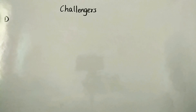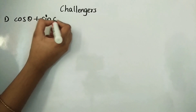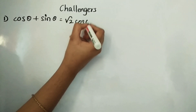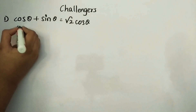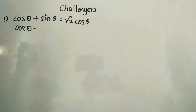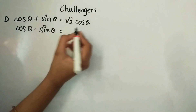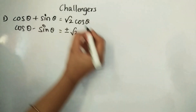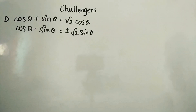The first question in challenges: if cos θ + sin θ = √2 cos θ, then what we have to prove is cos θ − sin θ = ±√2 sin θ. So whatever is written on the board, this has to be proved.